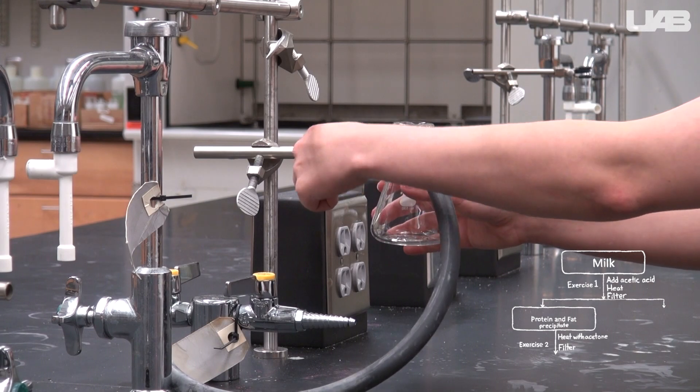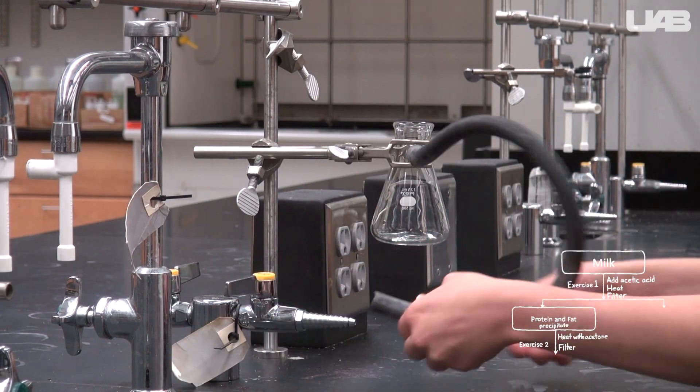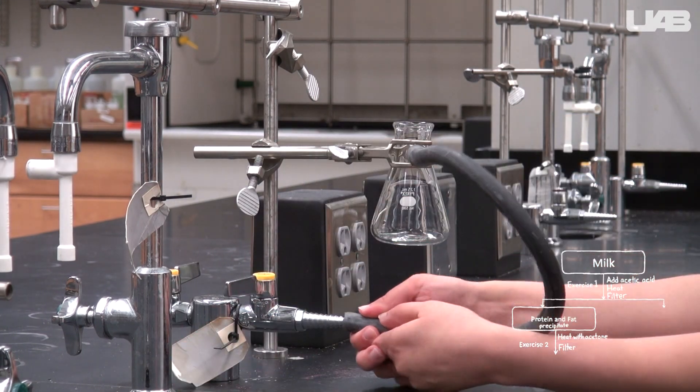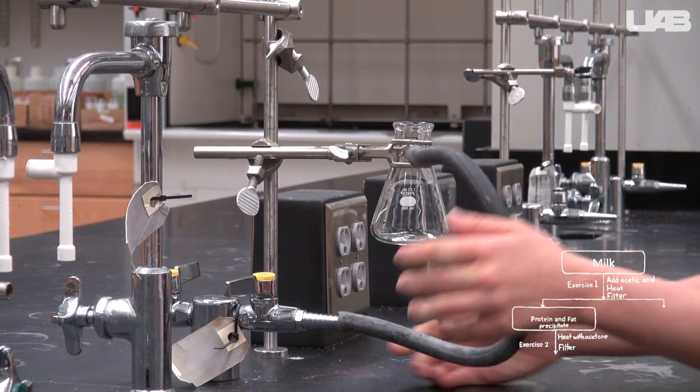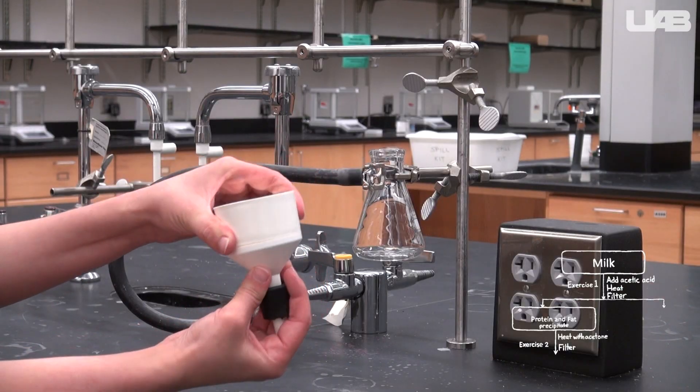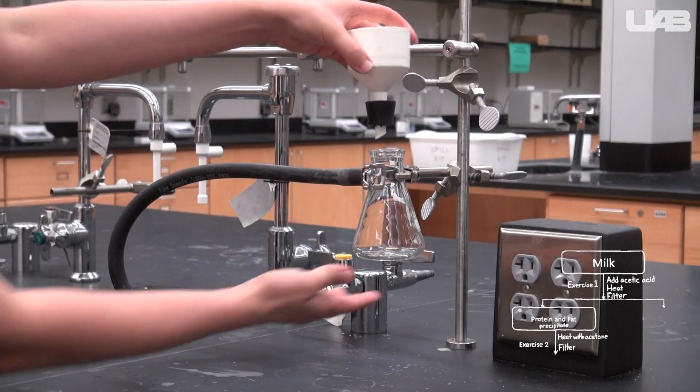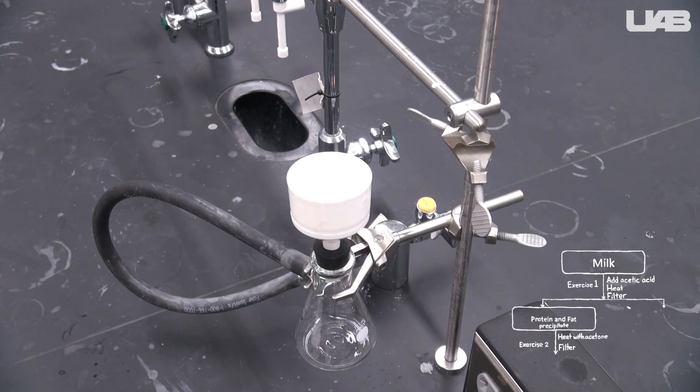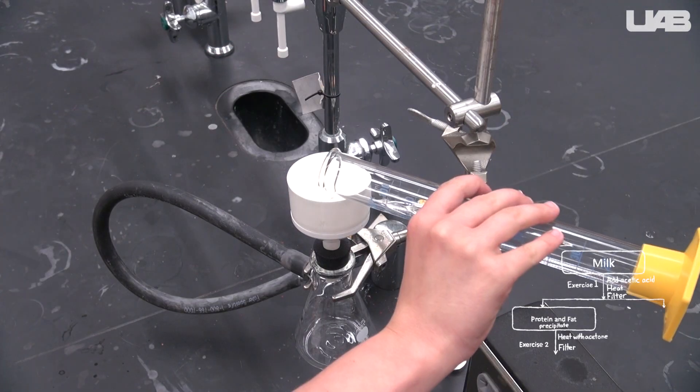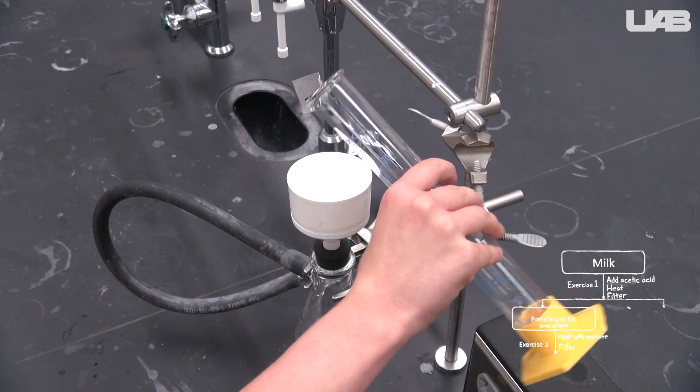First, we clamp the sidearm flask. The arm should go on the side with the two prongs. Plug the rubber tubing into the vacuum. Snap the two pieces of the Buchner funnel together and place it in the mouth of the sidearm flask. Place a piece of filter paper in the funnel and wet it with some of the solvent that is in the filtrate. In this case, acetone.